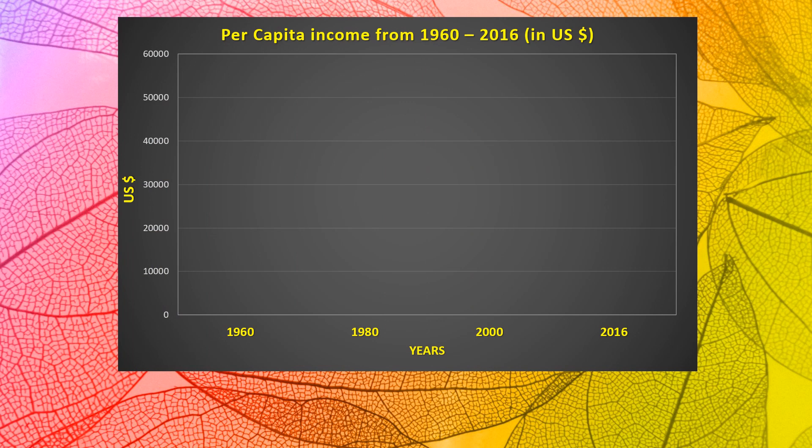On page number 53, they have given us data and asked us to prepare a polyline graph. We just studied that India exceeds Brazil in national income; however, India's per capita income is less than Brazil's. They have given per capita income from 1960 to 2016 for Brazil, India, and the USA. On the x-axis we have the years and on the y-axis we have US dollars.